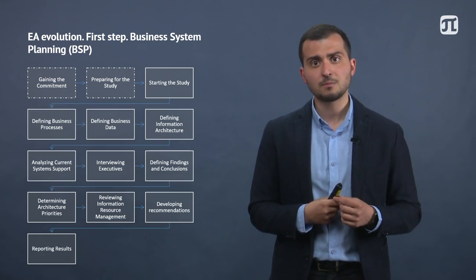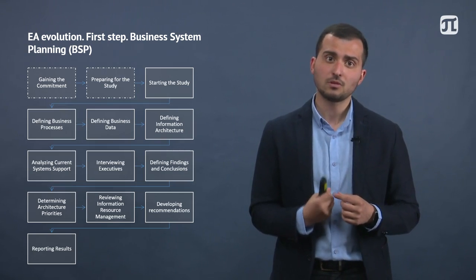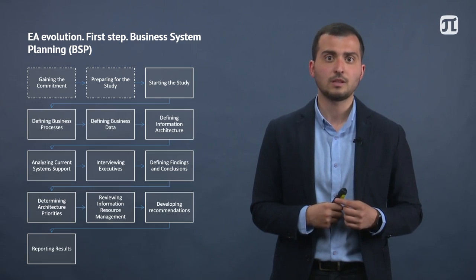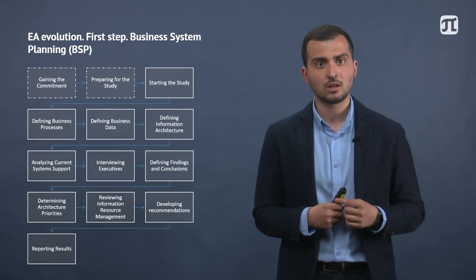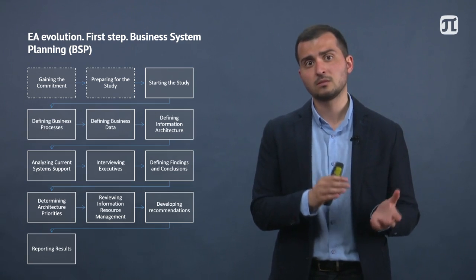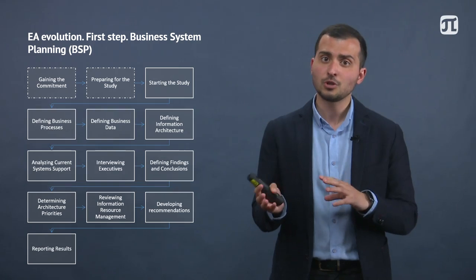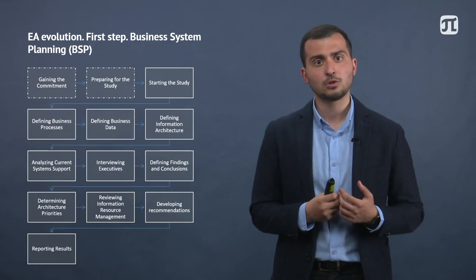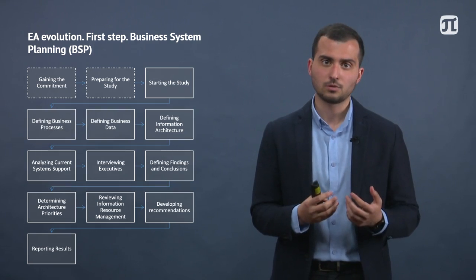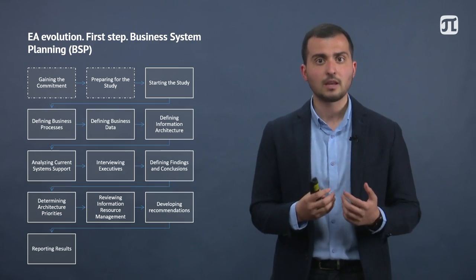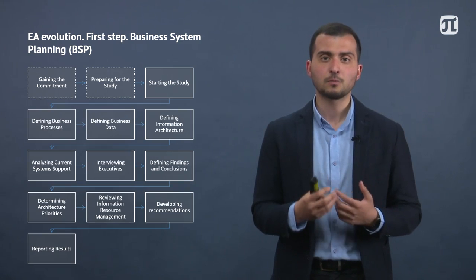The first edition of BSP, which you can see in the picture, resembles many important aspects of modern enterprise architecture approaches. We start from business process definition. We analyze the current information technology and work with stakeholders. We move further to recommendations development. Quite soon you will see that modern approaches have the same basics.